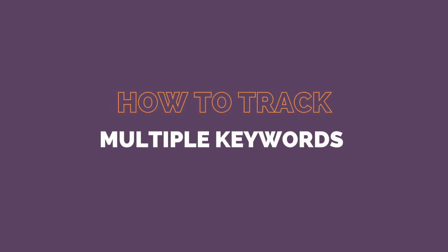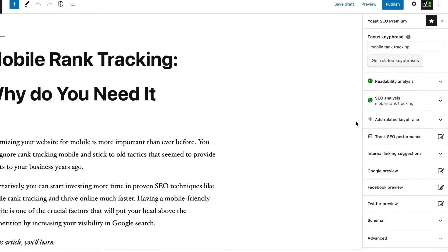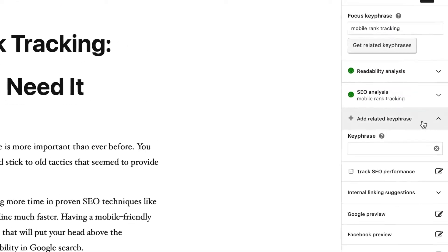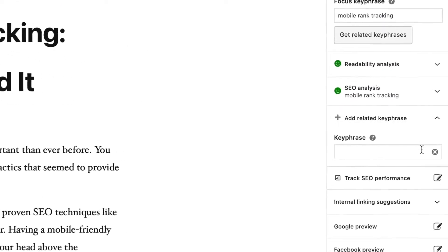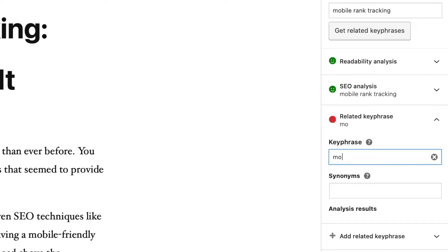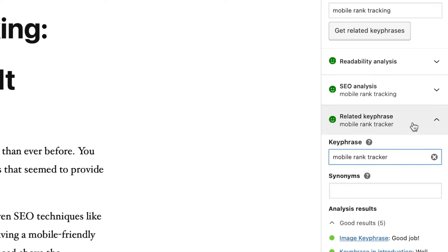Great news for those of you who have the Yoast SEO Premium account! You can track up to 5 keywords per one post. To do it, just click on the Add Related Keyphrase button and add the keyphrase that you want this page to also rank for in search results.